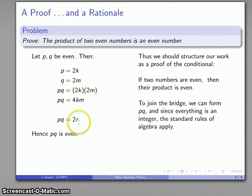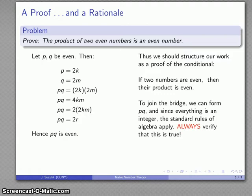So this product 2k times 2m is 4 times km. I want to bridge the gap between these two. I can do that: 4 times km is 2 times 2km. Now I have my statement pq is 2 times something, and then my conclusion pq is even is going to follow.